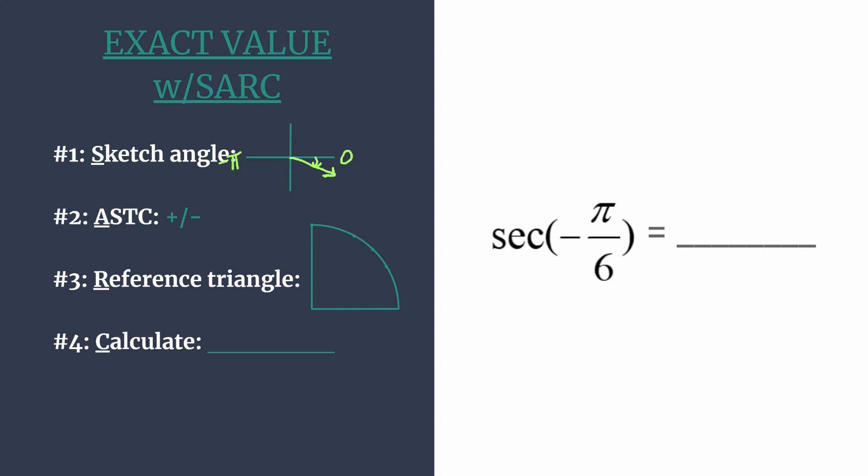Now ASTC will help us decide if secant is positive or negative in the fourth quadrant. Think all students take classes. And you just work your way around starting in the first quadrant. And this tells you which trig functions and their reciprocals are positive in each.